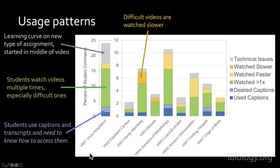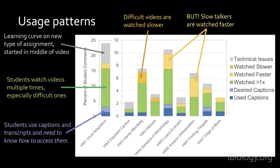Many students also reported changing the video speed. For difficult videos, they watched a little slower to follow along step by step. But speakers students considered slow talkers were watched faster to speed up the timing. This gives us an idea about how students were engaging technologically with the videos.